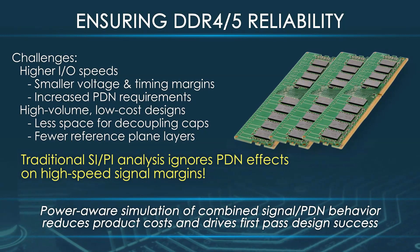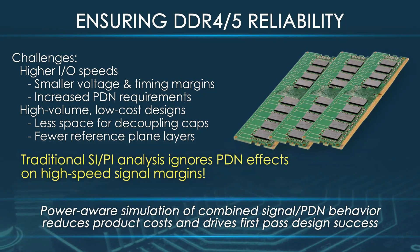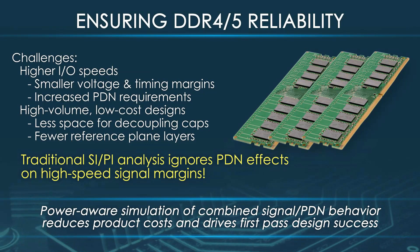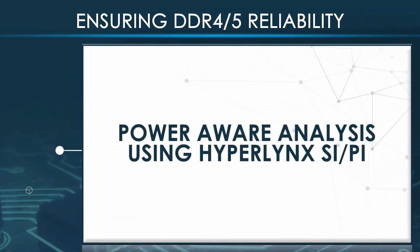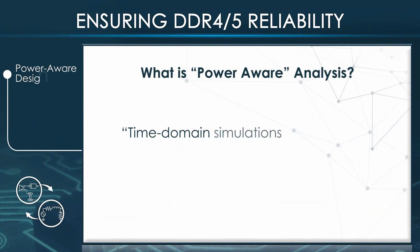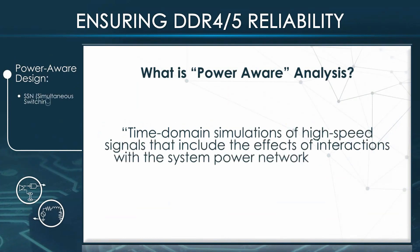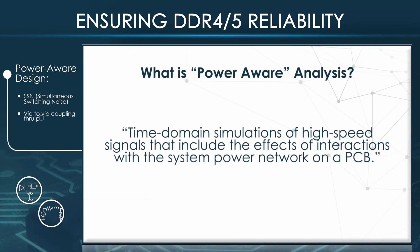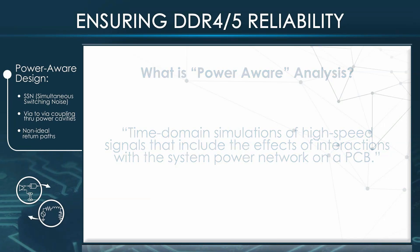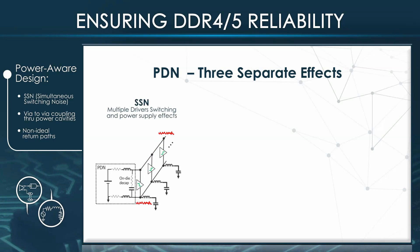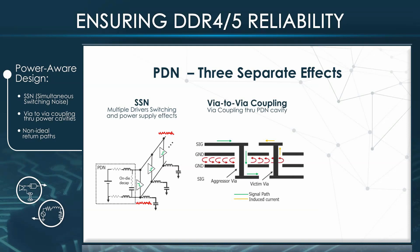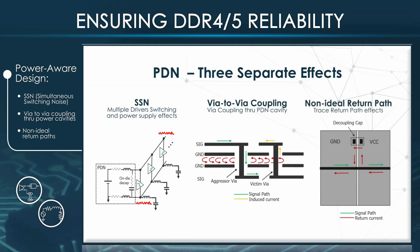Power-aware simulation in HyperLynx allows you to simulate combined signal and PDN behavior to determine if you have enough voltage and timing margins for first-pass design success. Power-aware analysis is time-domain simulation of high-speed signals that includes the effects of interactions with the system power network on a PCB. There are three different PDN effects to consider: the first is simultaneous switching noise (SSN), the second is via-to-via coupling, and the third is the non-ideal return path.